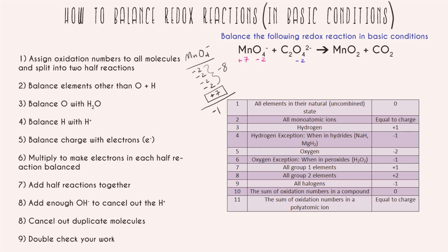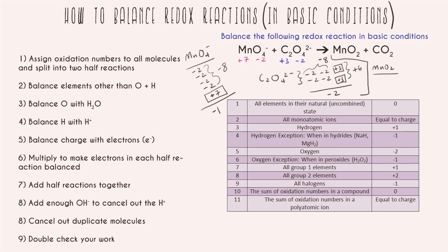Now for the carbon-containing molecule: every oxygen is negative two, and we have two carbons each with some oxidation number. Adding everything together we get negative two total. Our negative sum is negative eight, so our positive sum needs to be positive six — split between two carbons, they each have to be positive three. You always split evenly; you would never say one carbon is positive four and the other positive two.